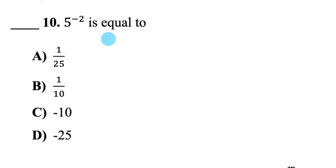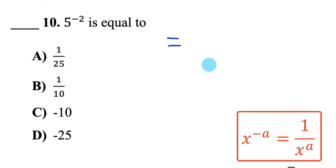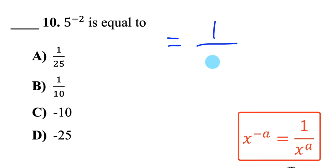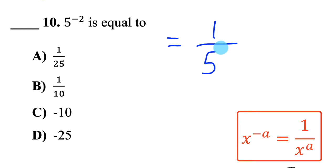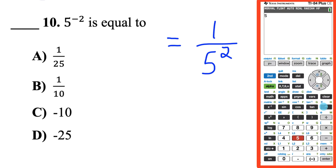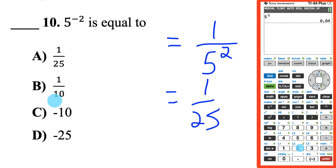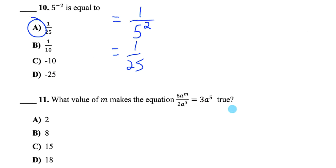Question 10: 5 to the power of negative 2 equals — the negative exponent rule tells me it equals the reciprocal with a positive exponent. So it's 1 over 5 squared, which is 1 over 25. And once again, when you're saying two things are equal, this is easily verifiable with your calculator.